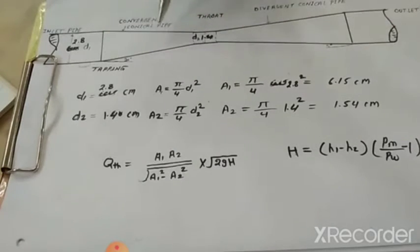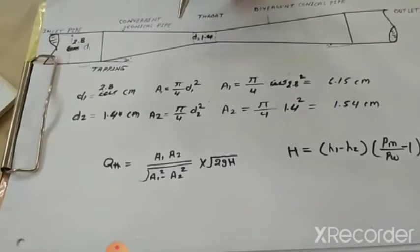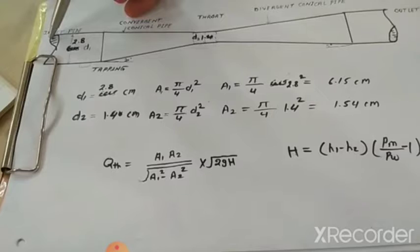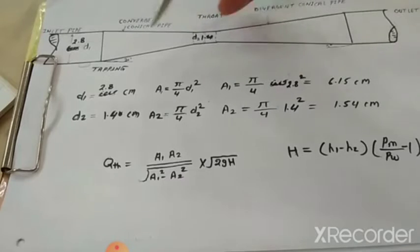The initial part of the venturi tube is short in length and small in size. Whereas the diameter of the throat is smaller than inlet pipe. If you can see the diameter of the throat here which is smaller than the inlet pipe. Then the one end of the throat is connected to the convergent pipe and the other end of the throat is connected to the divergent pipe.